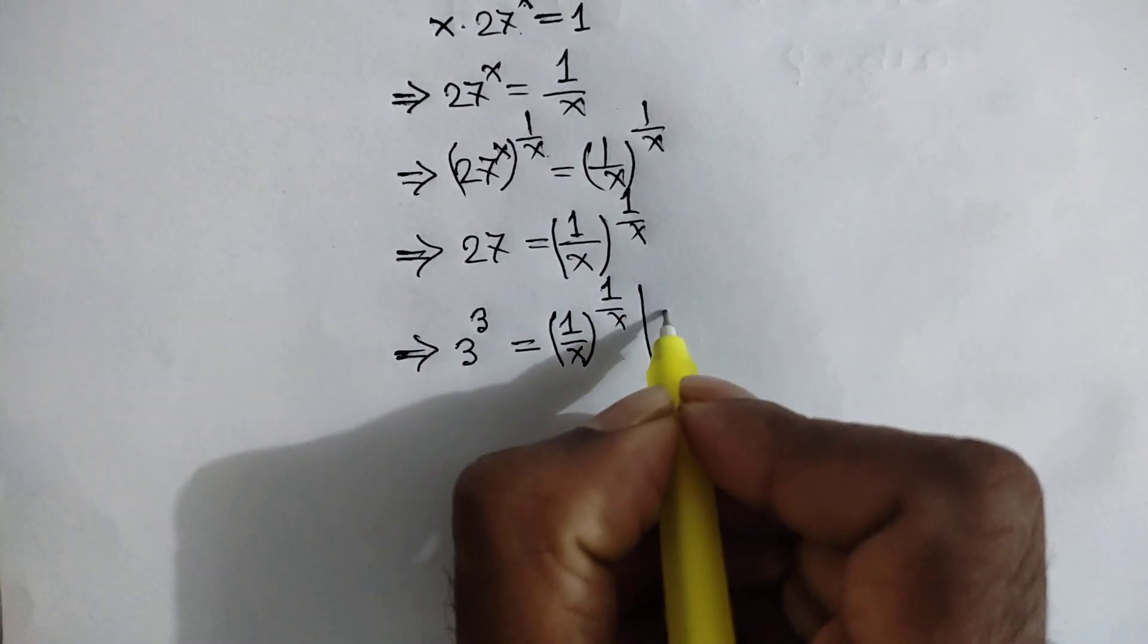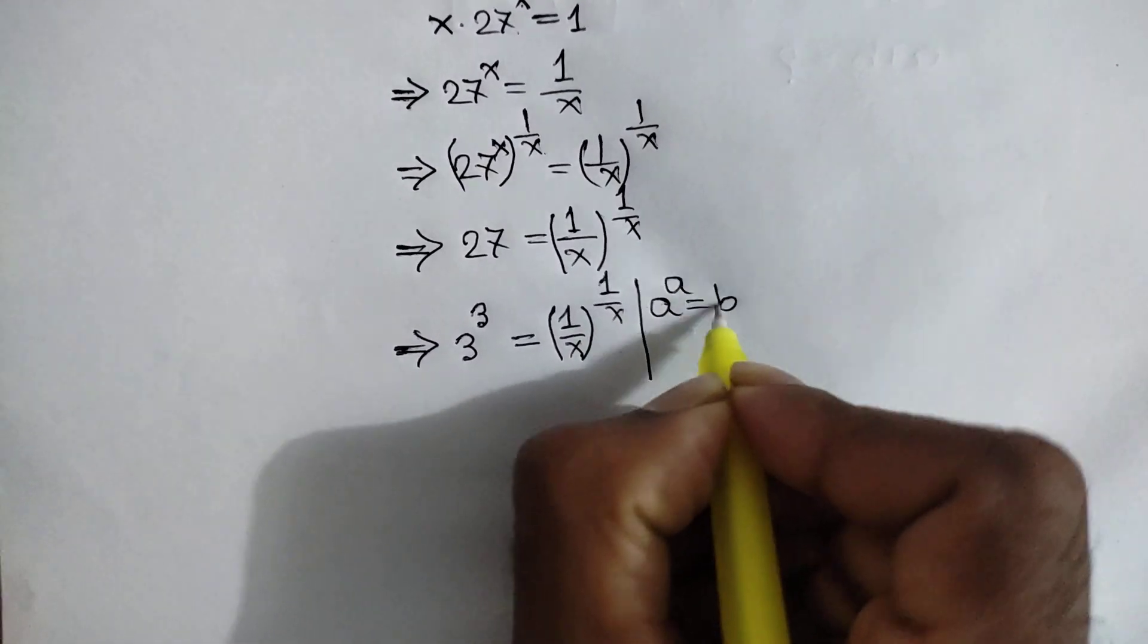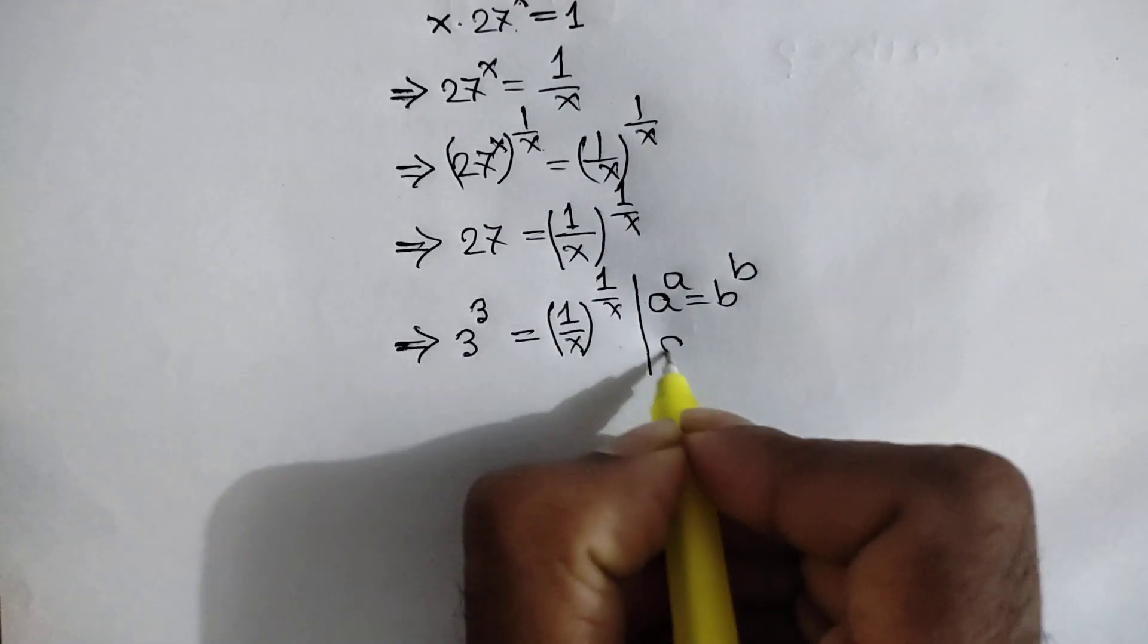Here we can apply this rule: a to the power a is equal to b to the power b, then a is equal to b.